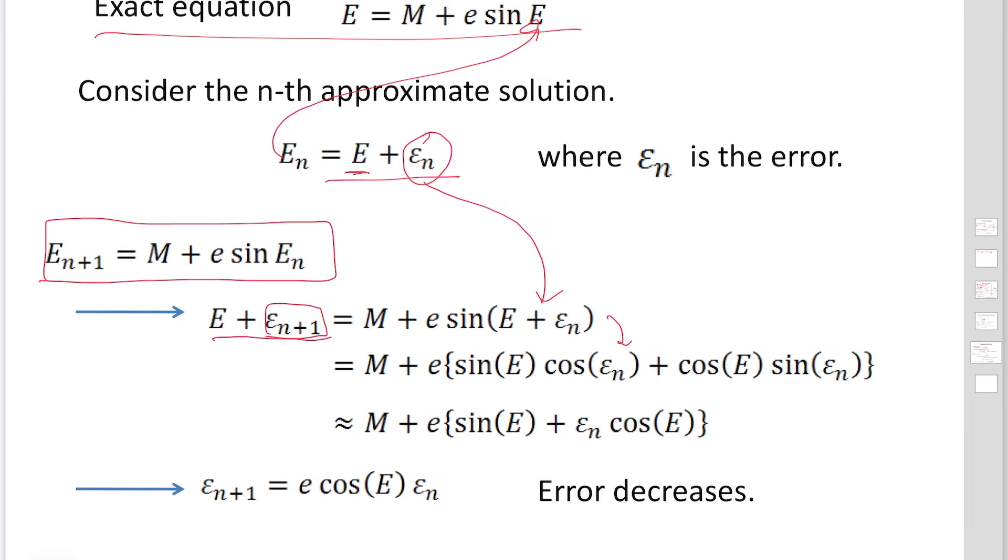Then from here to here, we use the addition formulas for a trigonometric function. So sine E cosine Epsilon n plus cosine E sine Epsilon n. And Epsilon sub n is smaller than 1. Then this becomes nearly 1. This becomes nearly Epsilon sub n. Then we are going to have this equation.